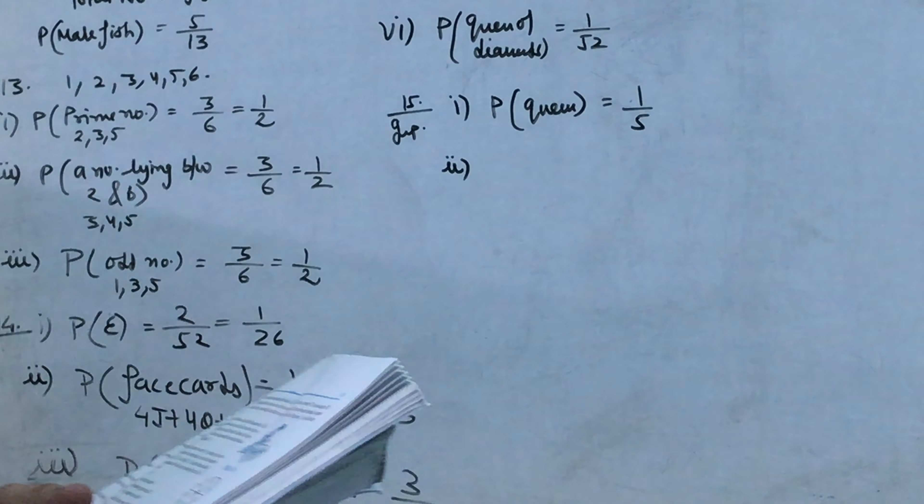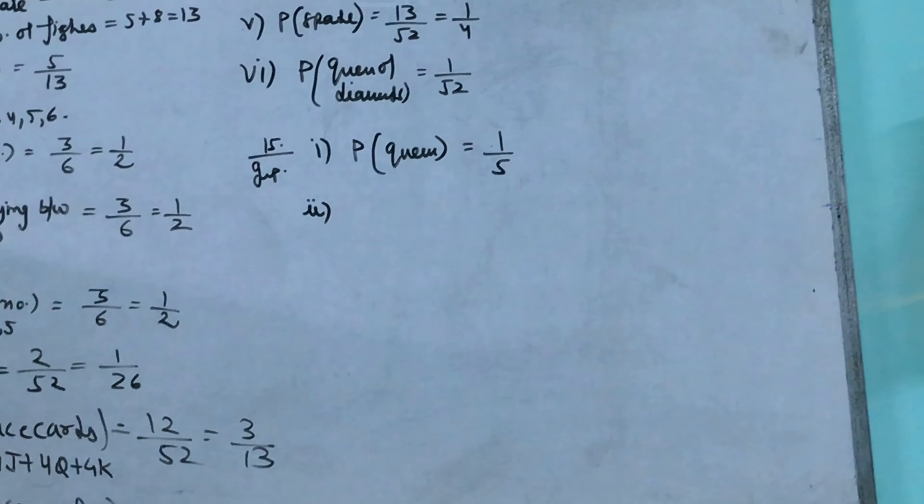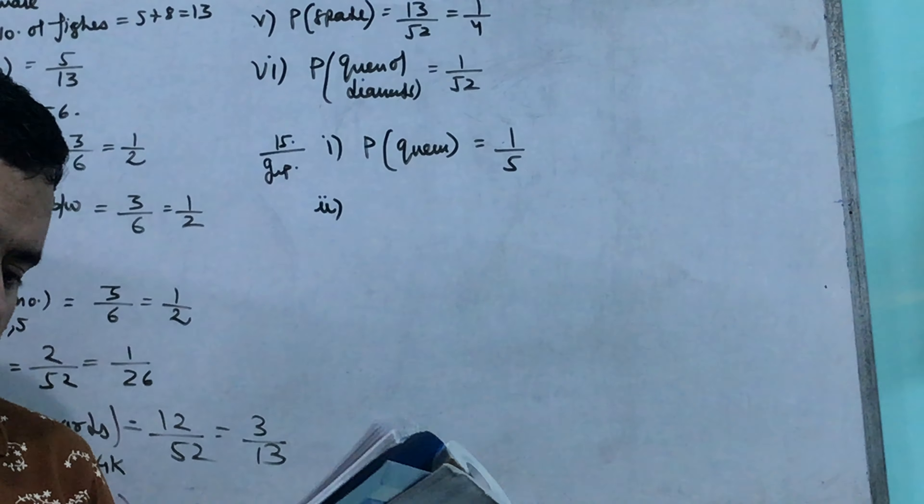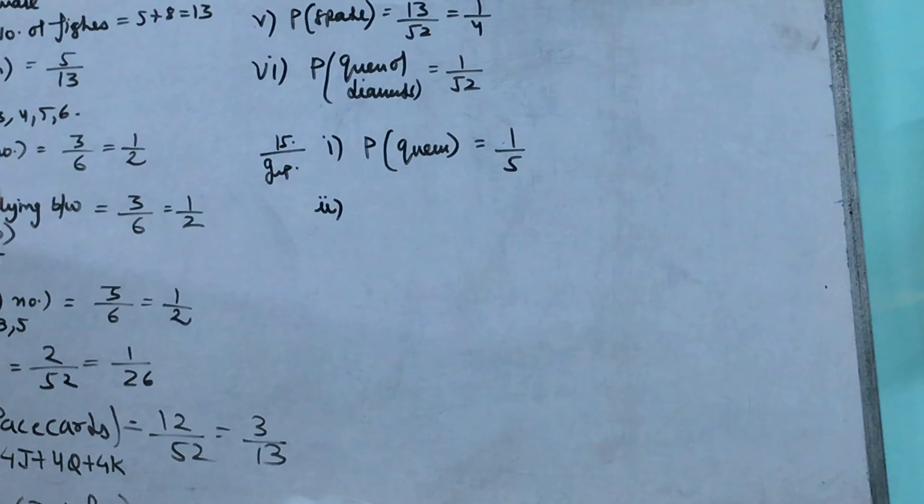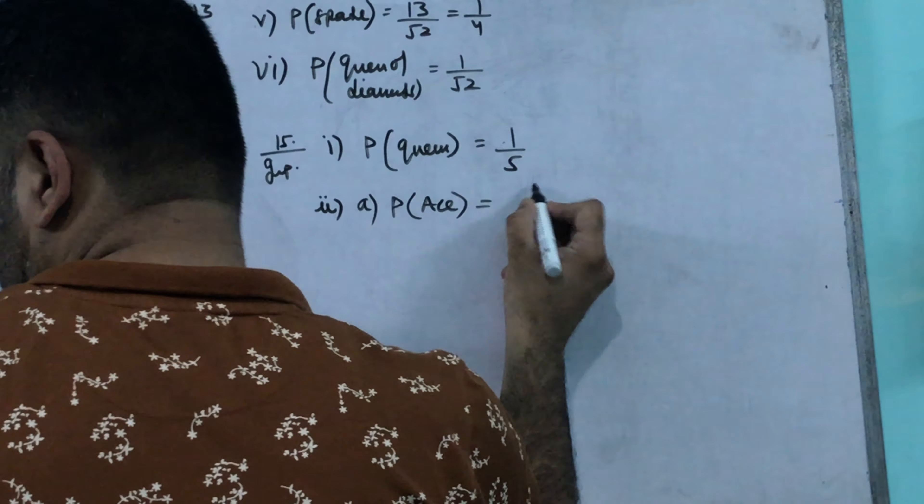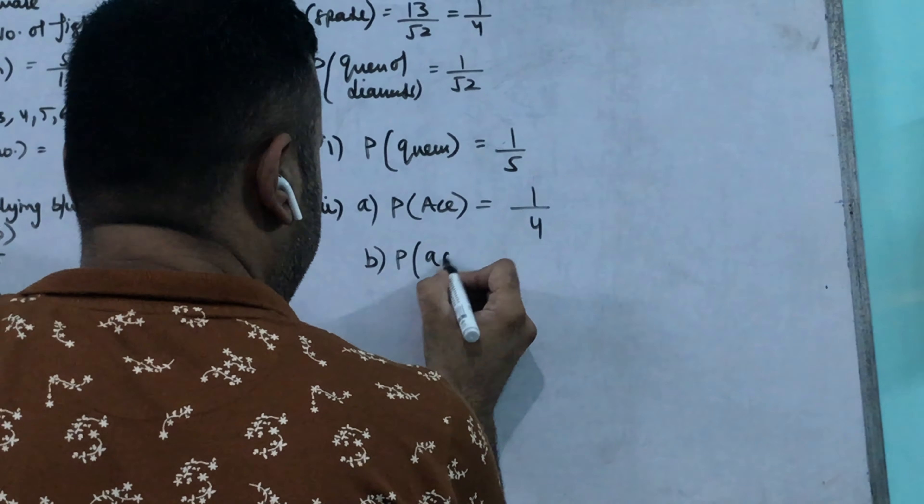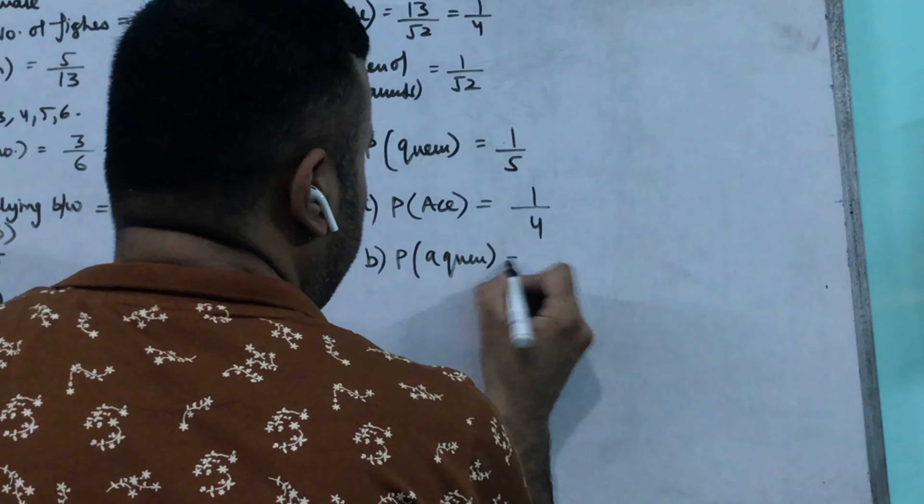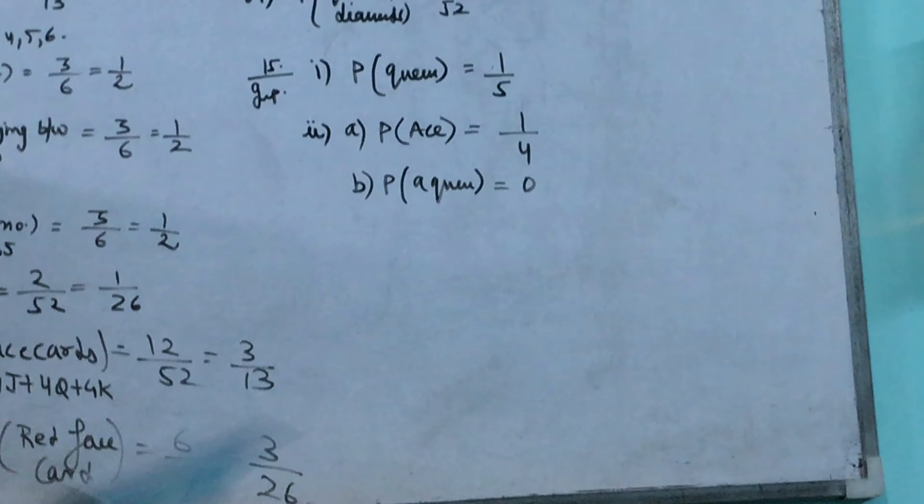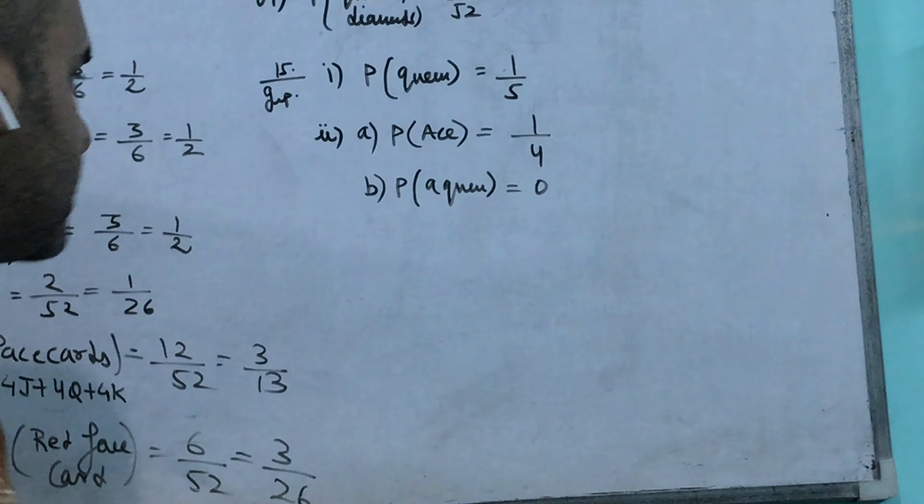Now the second part: if the queen is left on the side, and now the second card, what is the probability that ace will come in hand? Now 4 cards remain. One by four. Very good. And if queen will come in hand? The queen was 1, the first one left 0. So how much is the probability? Zero by anything, answer is 0. This is what we know.